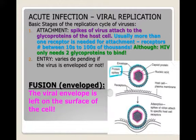Step one is attachment. Basically, attachment is how the virus finds its host cell. They're non-living, so how do they get attached? The spikes or glycoproteins of the virus attach to the glycoproteins of the host cell — they match like a lock and key fit. Usually more than one receptor is needed for attachment, and those receptors can number in the tens to hundreds of thousands. HIV is a notable exception: it only needs two different glycoproteins to bind, not tens to hundreds of thousands. Those glycoproteins attach to surface receptors on the host cell, stimulating the cell to take the virus in.